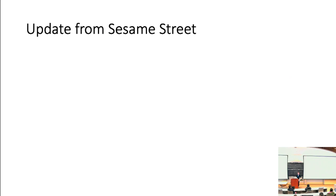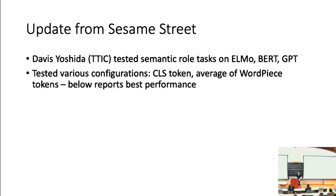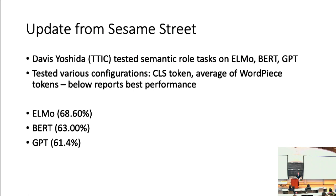Subsequently, with the Sesame Street models coming out, Davis Yoshida at TTIC tested the semantic role task on ELMO, BERT, and GPT, trying a number of different configurations including BERT's CLS token as a sentence representation, averaging word piece tokens, at various layers and weightings. The best configuration for each model: ELMO came in at 68%, BERT at 63%, and GPT at 61%. While ELMO was a little ahead of the previous encoders, the pattern looks much the same — still only marginally above chance. It looks like we still have work to be done in having a single sentence encoding that systematically captures semantic role information.